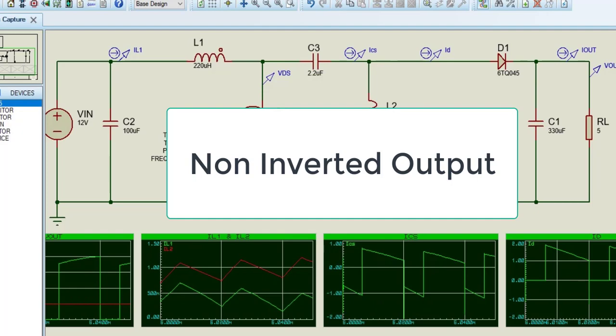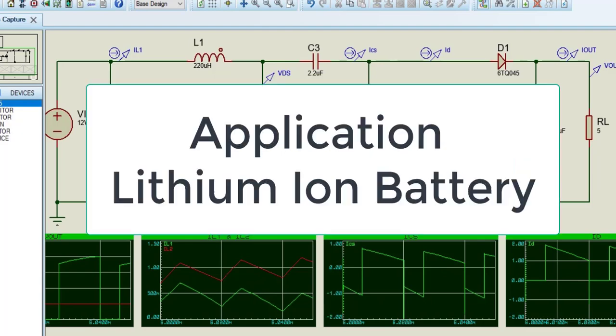SEPICs are useful in applications in which a battery voltage can be above and below that of the regulator's intended output. For example, a single lithium-ion battery typically discharges from 4.2 volts to 3 volts. If other components require 3.3 volts, then the SEPIC would be effective.